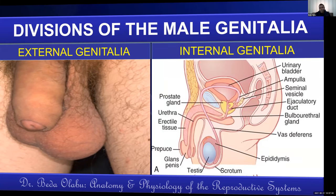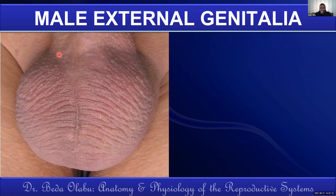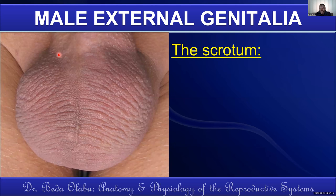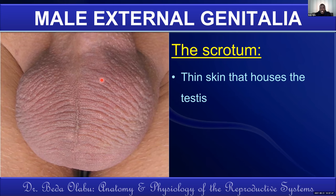Let's start with the structure and role of the male external genitalia, beginning with the scrotum. The scrotum is a thin skin that houses the testes. It is one structure with a septum in the middle dividing it into right and left scrotal sac compartments. Those compartments contain the respective testes.